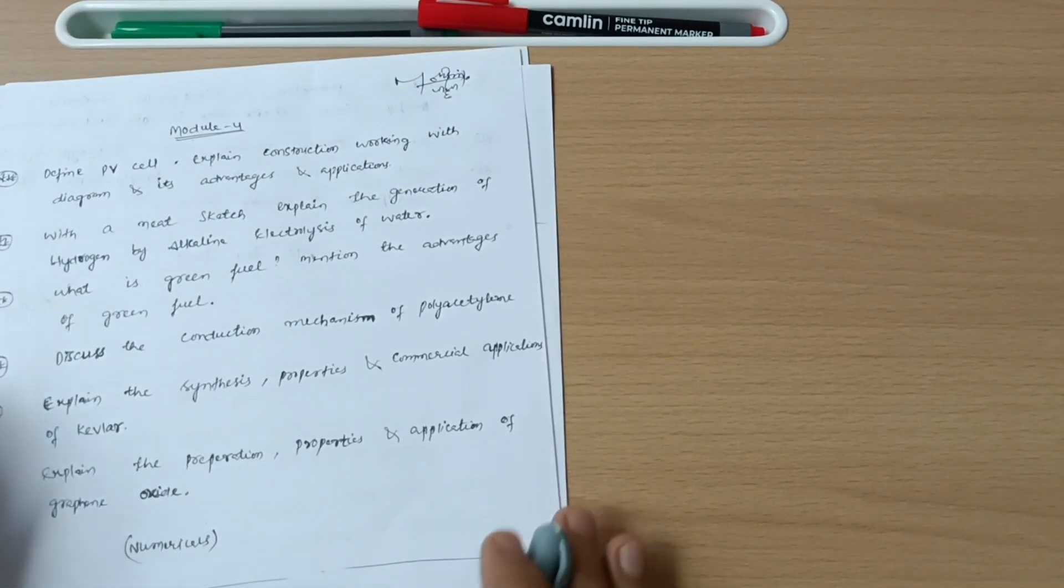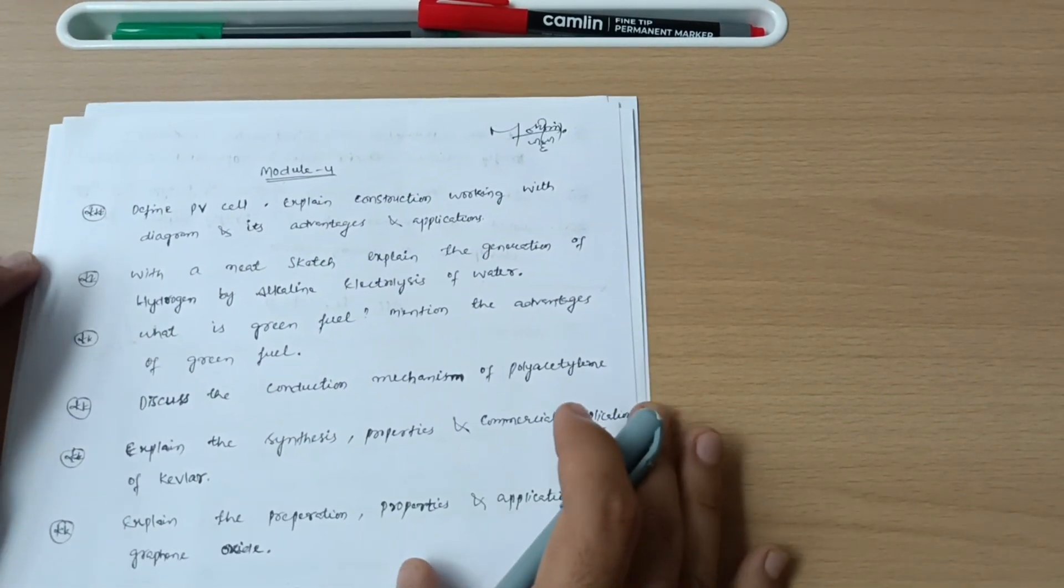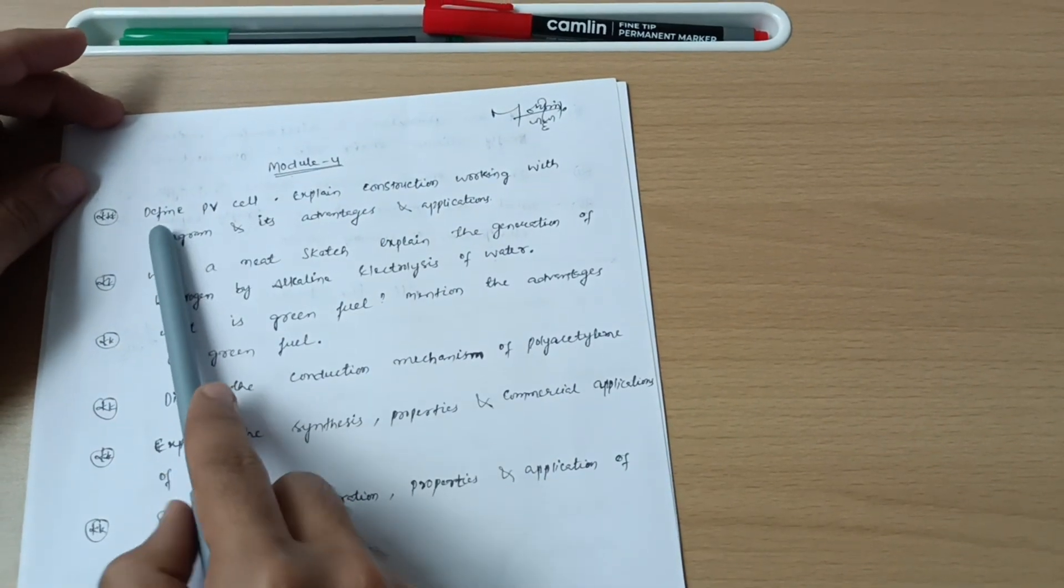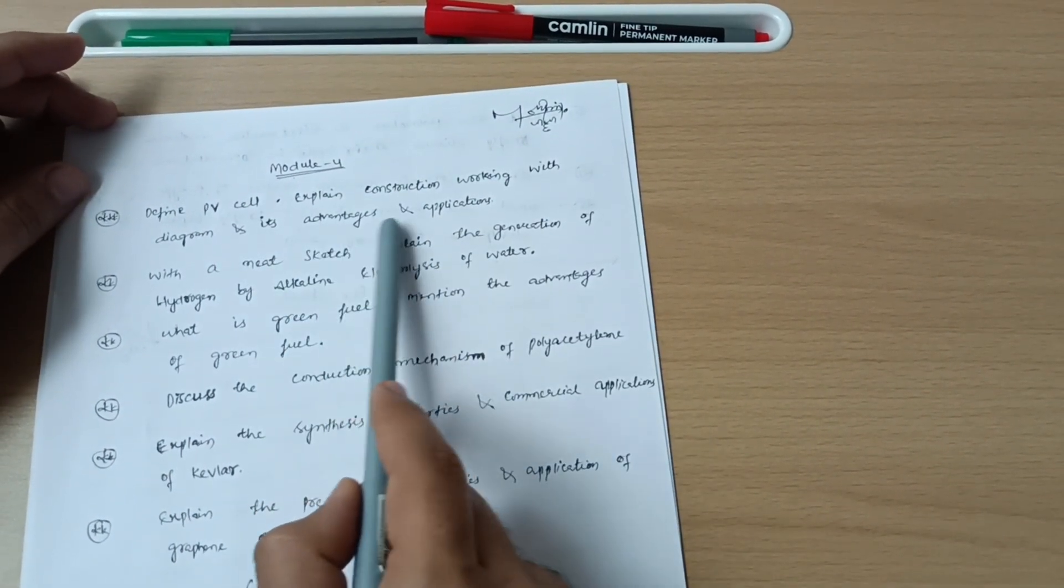If we talk about module four, there are some six questions which you have to cover so that you can at least get 15 marks. Define a PV cell, explain construction and working with diagrams, advantages and applications.